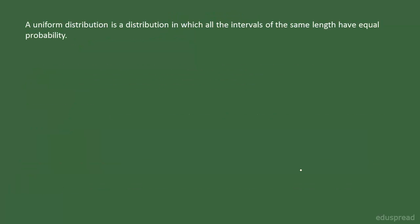By definition, a uniform distribution is a distribution in which all the intervals of the same length have equal probability. In our example, all the intervals have equal length of one minute and we have past data to conclude that the probabilities of these one minute intervals are equal. So by definition, our random variable x is said to have a uniform probability distribution.